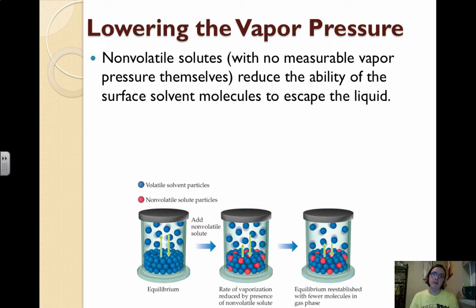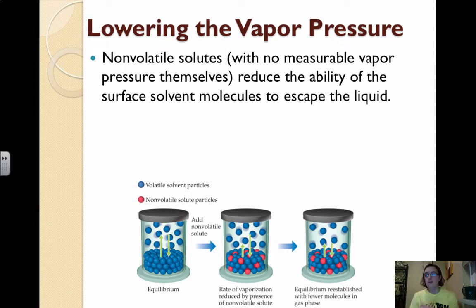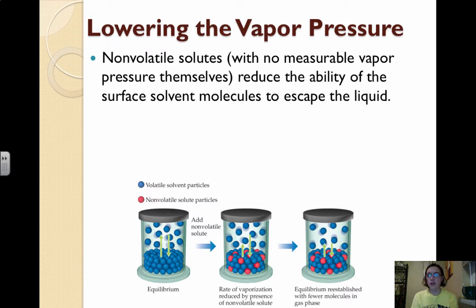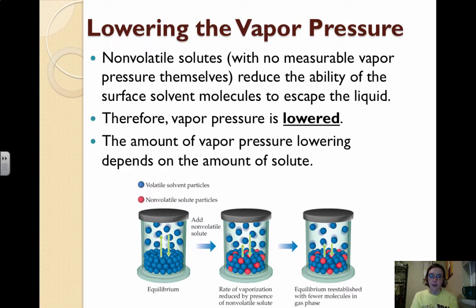When we put a solute in, it has to be non-volatile, meaning it doesn't have a vapor pressure itself — otherwise we'd have to calculate two vapor pressures. When we put a solute in, it reduces the ability of solvent molecules to escape the liquid and evaporate. The solvent particles must collide with and be at the surface of the liquid to escape, but the solute particles get in the way, resulting in less vapor above and a lower vapor pressure. The more solute dissolved, the lower the vapor pressure will be.